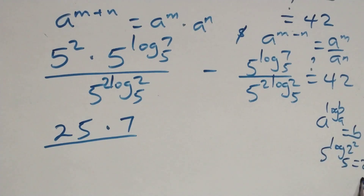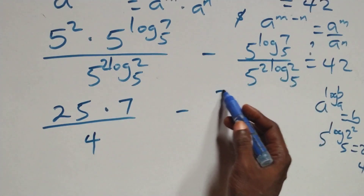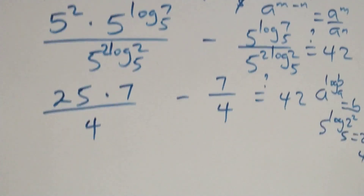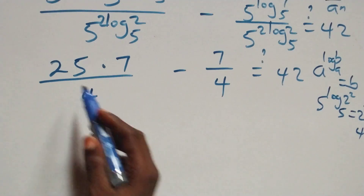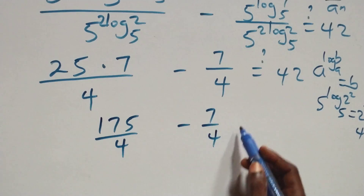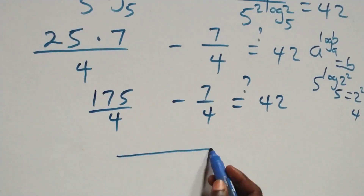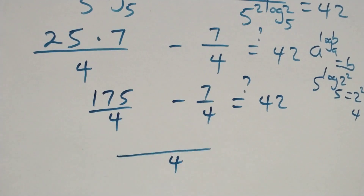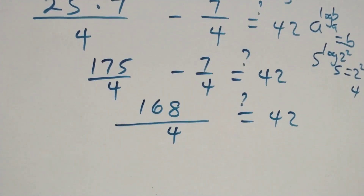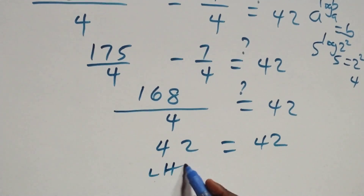This equals to 2 squared which is 4. So all we have here is 4. Then minus here we have 7, then over also 4. This equals to 42 on this side. So we have 25 times 7, that's 175 over 4, minus 7 over 4. Is it equals to 42? We bring this together as one fraction: 175 minus 7 is 168, and 168 over 4 equals 42, which is equals to 42 on this side. So we have left hand side equals to right hand side.